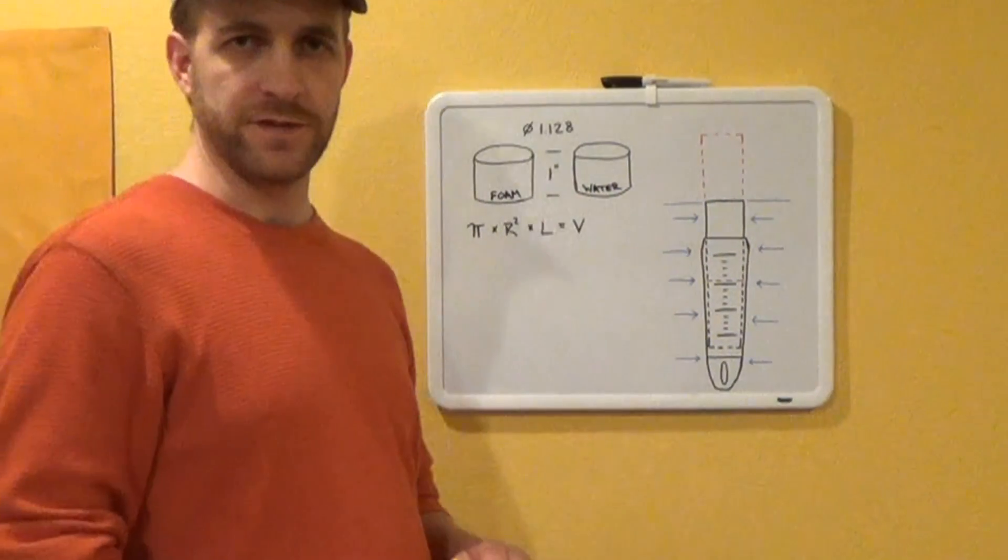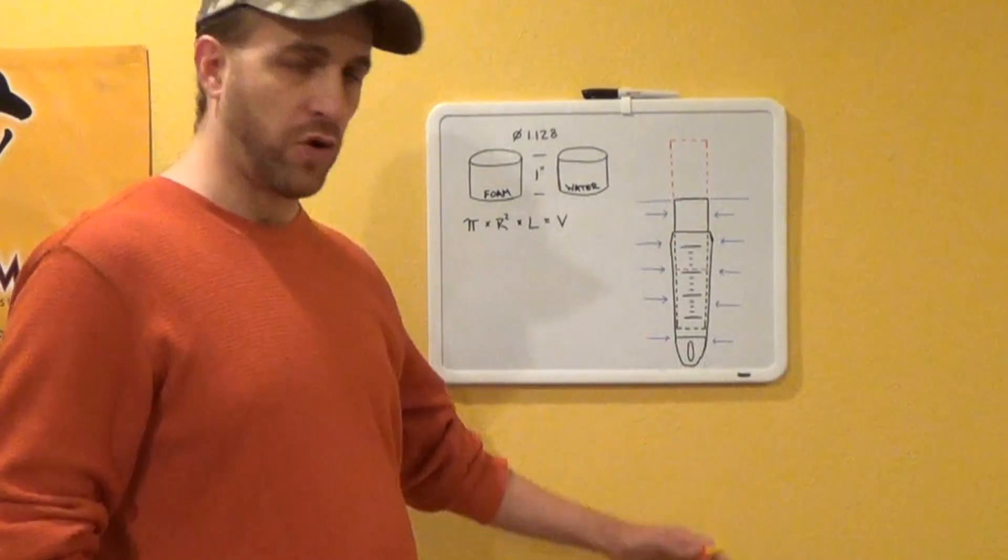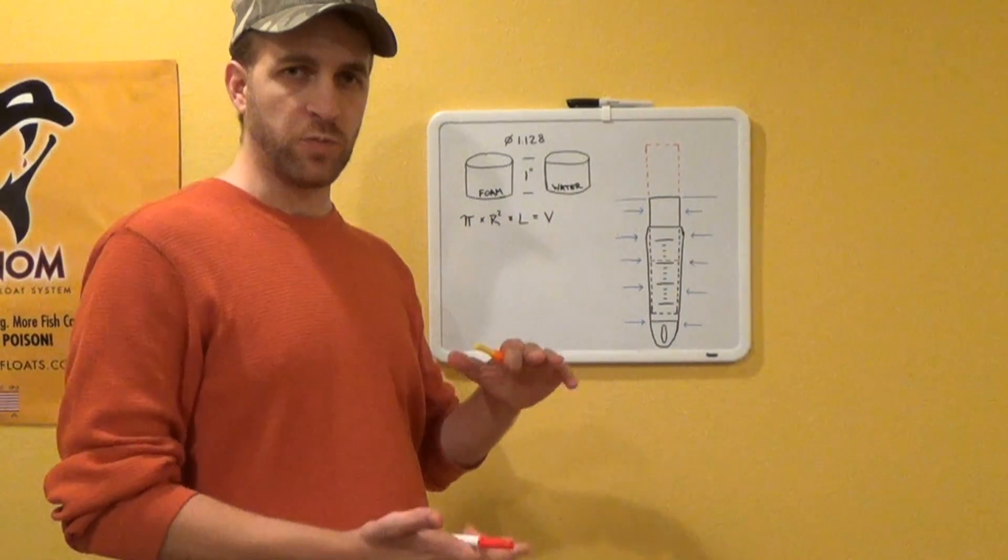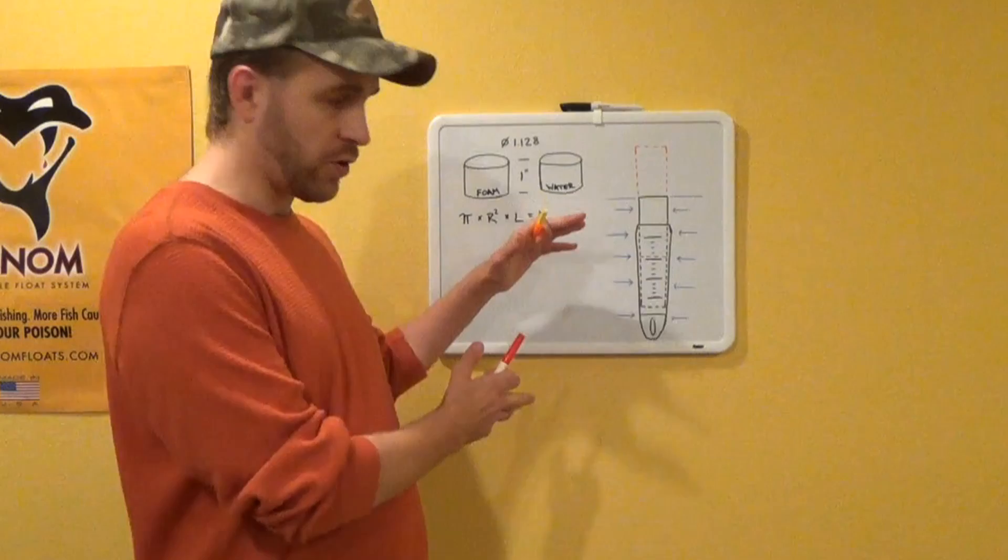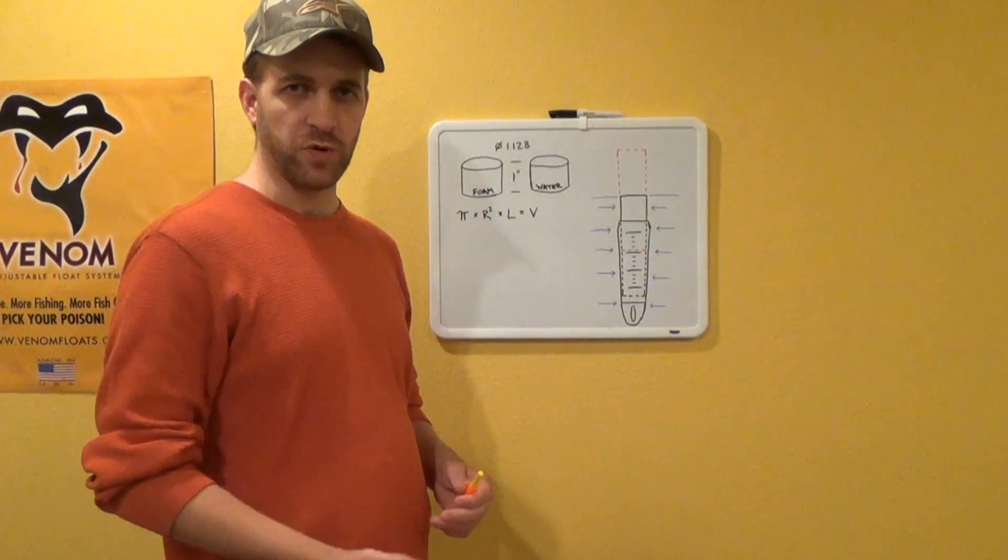If you have a minnow, say you're fishing with a crappie minnow, if you go to a fathead, it has more pull on your bobber. If you pull that foam out a little bit, now your bobber is more resistant. So you have more buoyancy there. So the minnow is not as easily going to be able to pull that bobber down.